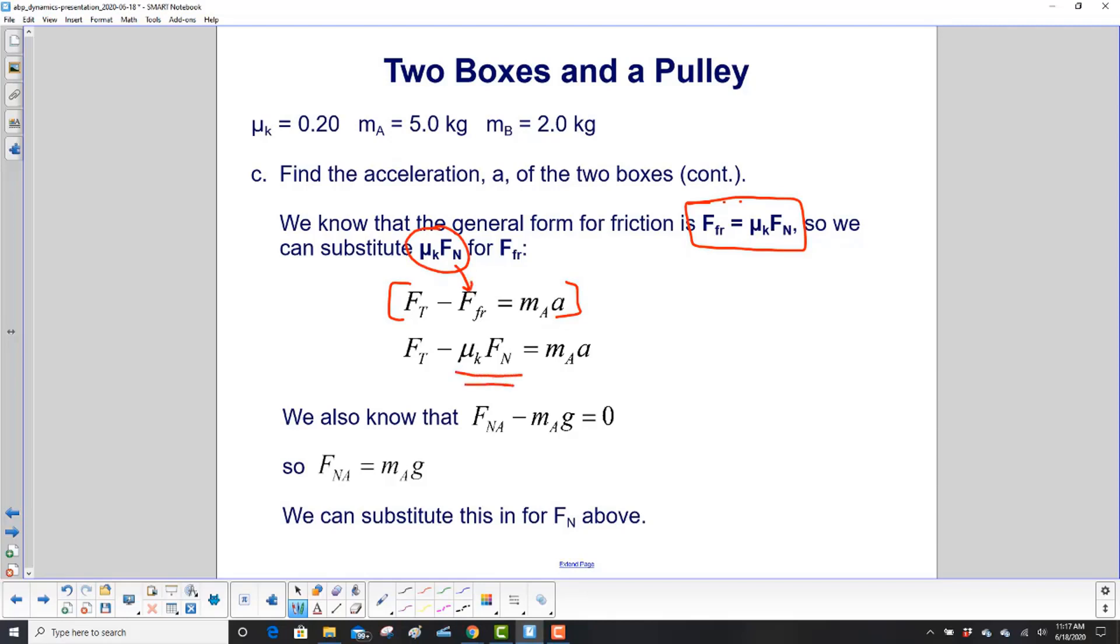So instead of friction force, we have mu k times F N. We can go further now. We also know from the y direction for box A that we have the normal force on box A minus M sub A G equals zero because the box isn't bouncing up and down.